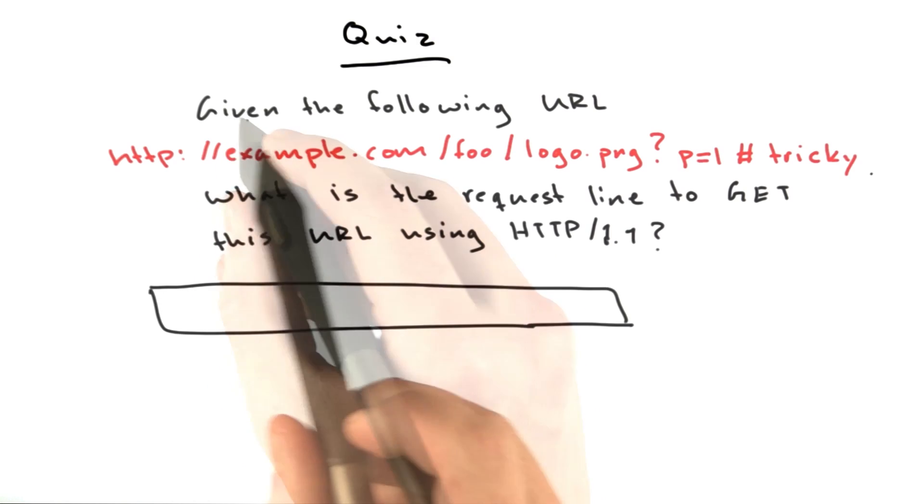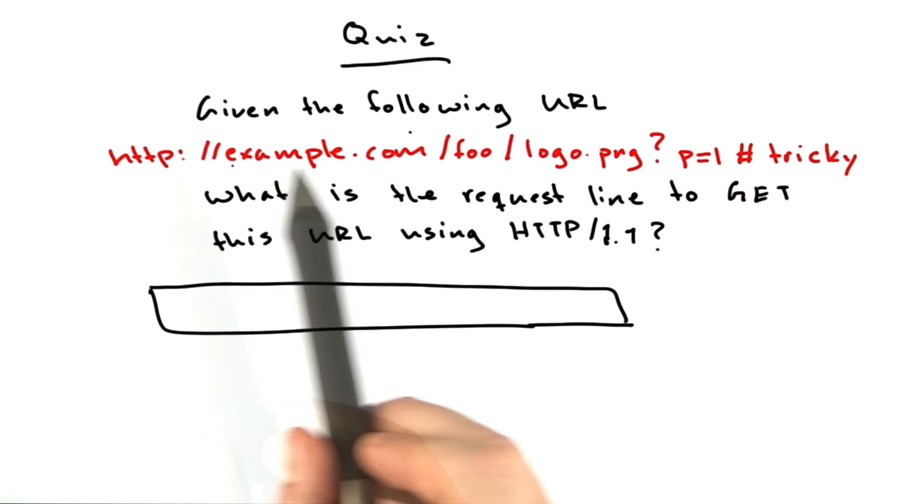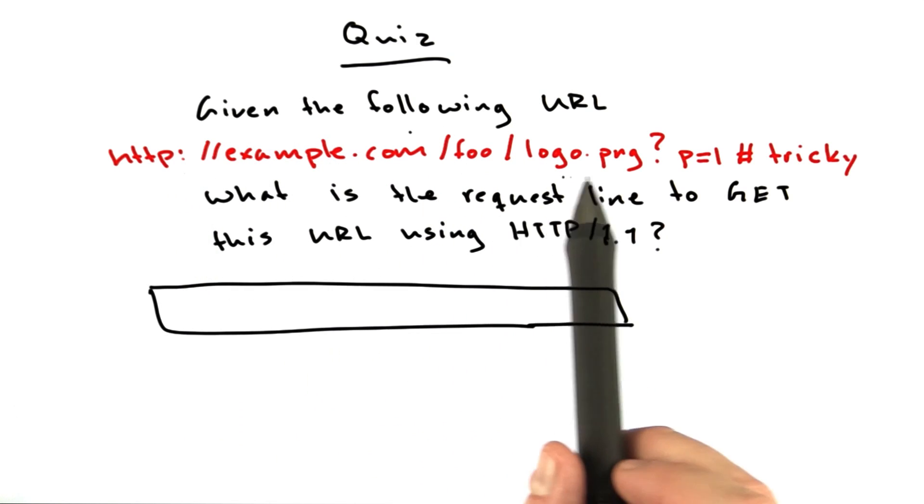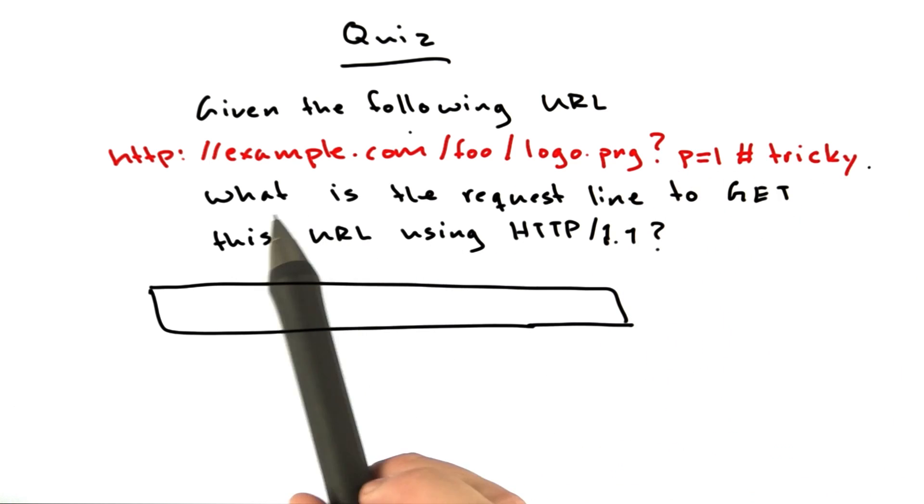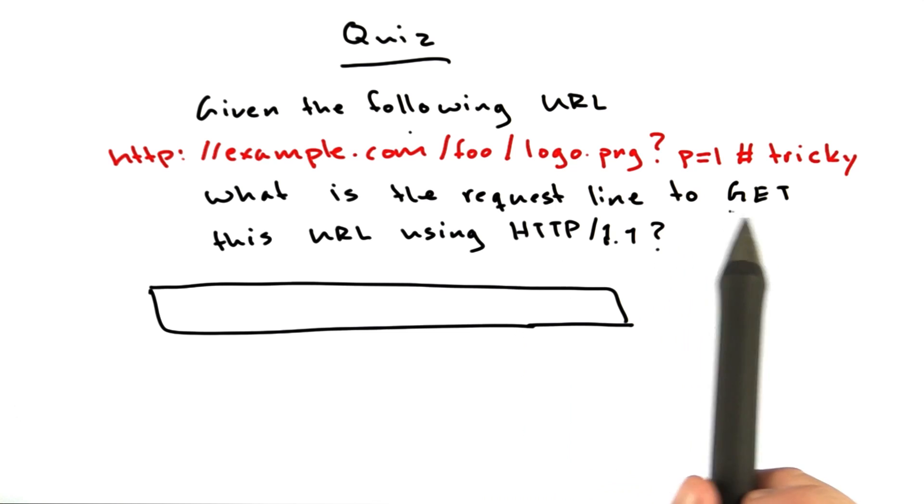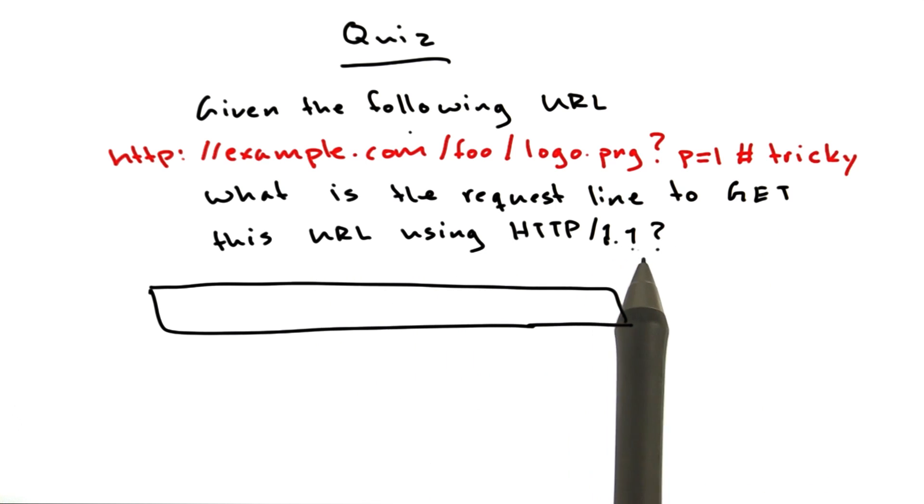Let's have a quick quiz. Given the following URL, example.com/foo/logo.png?p=1#tricky. What is the request line to get this URL using HTTP 1.1?